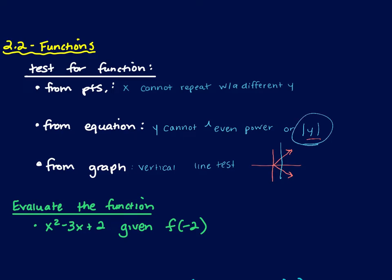Think about something like the absolute value of y — this is actually a V turned on its side, which fails the vertical line test and the equation test. And if you had points like (1, 1) and (1, -1), that same x would have two different y's, so it would also fail the points test. All three tests should be consistent — if it fails one, it would fail all three.